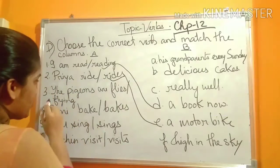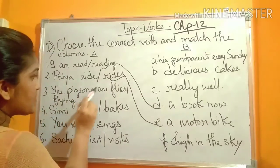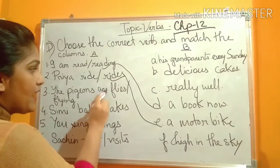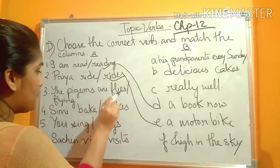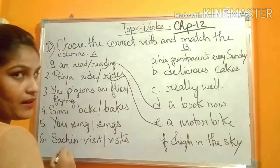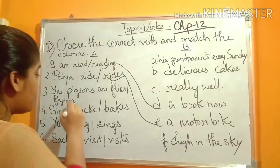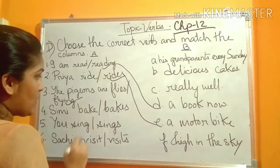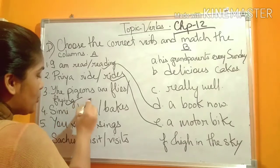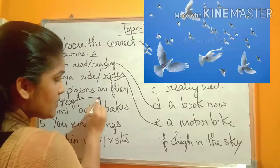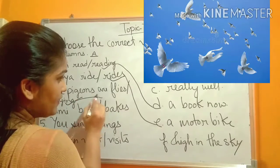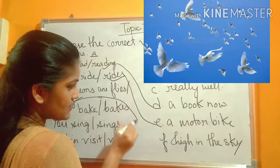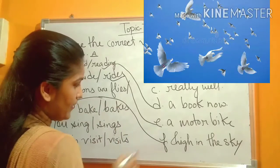Number three: The pieces are — flies or flying? There are two verbs, and 'are' is there. So it will be flying. Tick mark this one. After that join it: flying where? High in the sky.